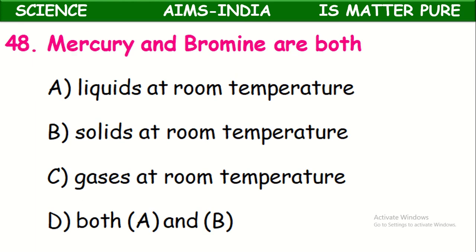Mercury and Bromine are both what? Mercury is a liquid metal, and Bromine is a liquid non-metal. Both are liquids at room temperature. Mercury is the only liquid metal, whereas Bromine is the only liquid non-metal at room temperature.